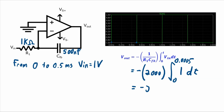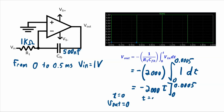This equals negative 2000·t evaluated from 0 to 0.0005. At t = 0.0005 s, V_out equals negative 2000 × 0.0005, which is negative 1. So from time 0 to 0.5 ms, V_out changes by minus 1 volt in a linear manner. If we assume V_out starts at 0.5 V, it decreases by 1 volt over this 0.5 ms, going from 0.5 V down to negative 0.5 V in a straight line.